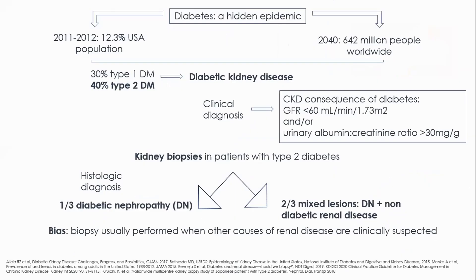As you know, diabetes is a hidden epidemic. In 2012, 12% of the US population was diabetic. And in 2040, more than 600 million people will present diabetes worldwide. 40% of patients with diabetes develop diabetic kidney disease.